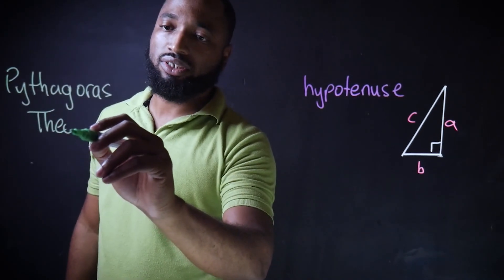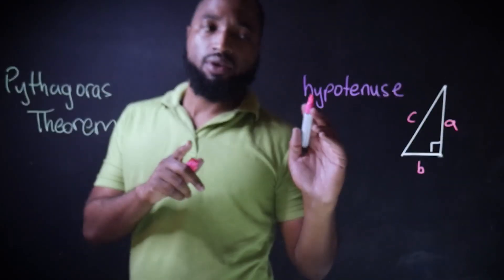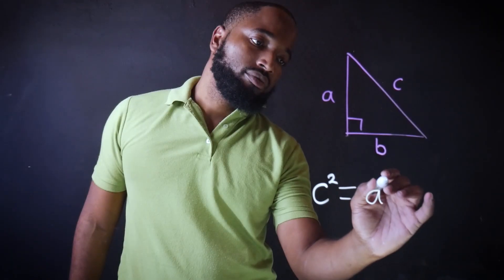Well, Pythagoras' theorem says that for any right angle triangle, C squared is equal to A squared plus B squared.